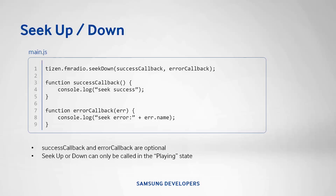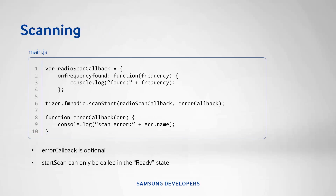Remember that seek up or down is only available in the playing state. When scanning for stations, the radioScanCallback parameter is required while the error callback is optional. In our example, we defined our radioScanCallback to log the frequencies found in the console whenever it finds one. Afterwards, we called scanStart passing our radioScanCallback as a parameter. Remember that scanStart can only be called in the ready state.